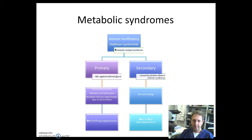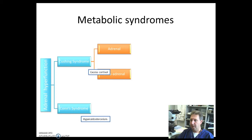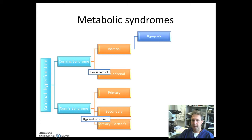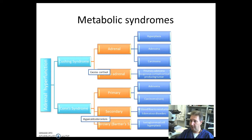The next metabolic syndrome is adrenal hyperfunction. We have Cushing syndrome, which is caused by excess cortisol, and hyperaldosteronism. Cushing syndrome can be caused by adrenal or extra-adrenal causes, while hyperaldosteronism can be primary, secondary, or tertiary. Adrenal Cushing syndrome can be caused by adrenal hyperplasia, adenomas, and rarely carcinomas, and extra-adrenal causes include pituitary adenomas or exogenous cortisol-producing tumors. Hyperaldosteronism can be caused by adenomas and carcinomas, which is exceedingly rare. Secondary hyperaldosteronism is produced by decrease of blood flow in the renal artery or adenomatous disorders such as chronic heart failure. Tertiary hyperaldosteronism or Bartter syndrome is produced by hyperplasia of the juxtaglomerular cell apparatus.